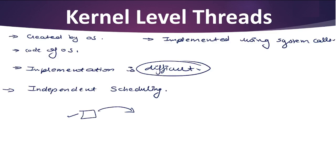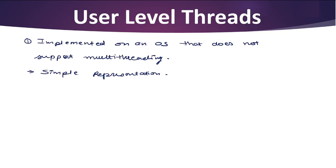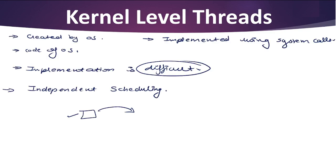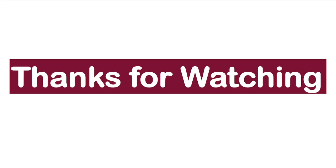For kernel level threads, since the operating system is involved, everything is slower. The disadvantage of user level threads is that if one thread is blocked, it can block the entire process or system. These are the important points related to user level as well as kernel level threads. I hope everything is clear. Thanks everyone for watching.